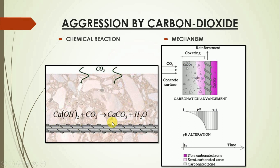How does the continuous penetration of carbon dioxide into the concrete take place? The answer lies in the fact that the pH of pore water in hardened concrete is between 12.5 to 13.3. Due to this, a passive film is formed around the steel reinforcement, called the covering, which protects the steel reinforcement from attack by oxygen and water.